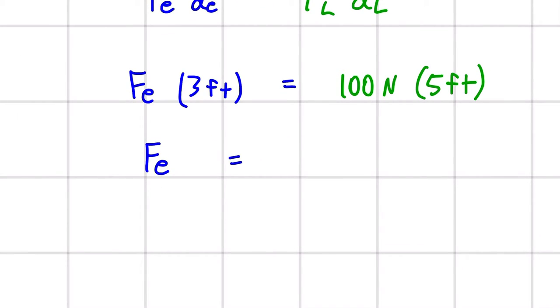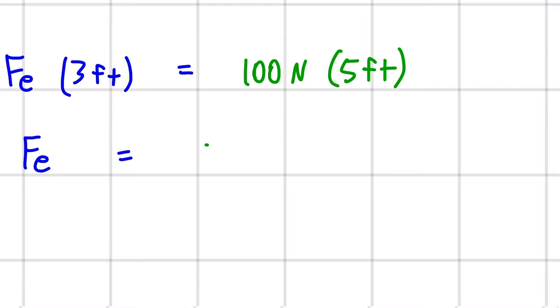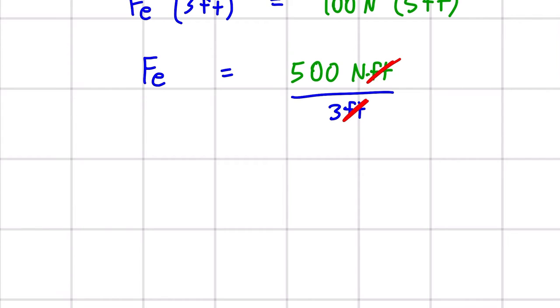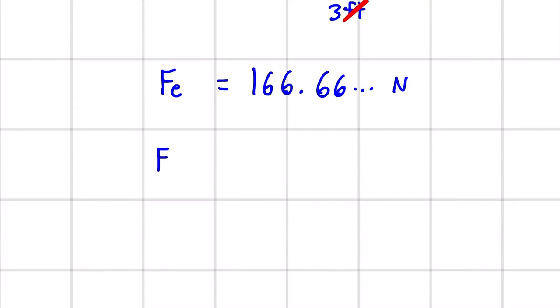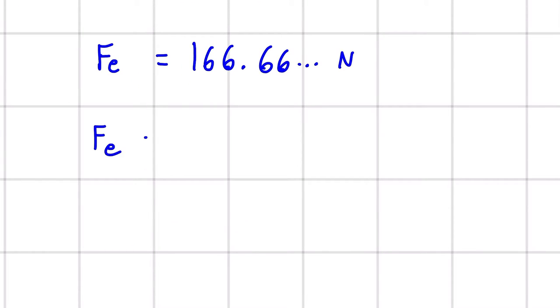So Fe is equal to 100 newtons. And I'm actually going to do this multiplication step right here. So it's going to be 500 newton feet divided by 3 feet. And you can see we'll have some units that cancel out here, the feet. And we're going to be left with Fe is equal to 166.66 repeating newtons. So for our final answer, we'll round this to 3 significant digits, 167 newtons.